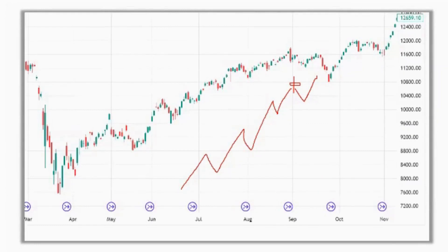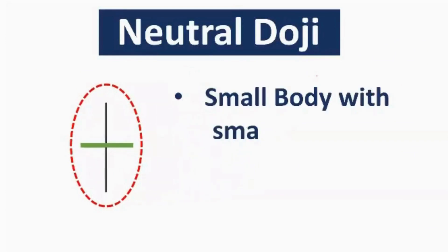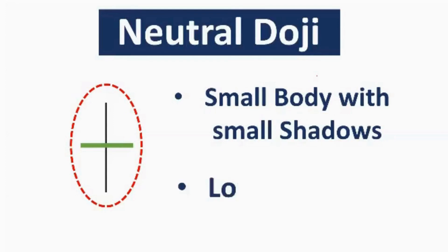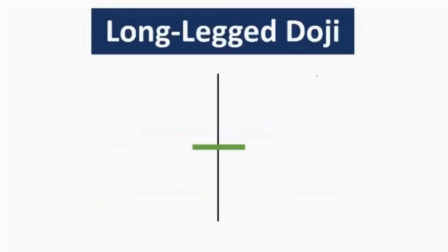The first type is the neutral doji. This pattern has a very small body with a very small shadow. It tells us that the number of buyers and sellers in the stock is very low, volume on this candle is very little, and it indicates low volatility in the market. I personally suggest you ignore this type of doji because it won't indicate a potential reversal or downtrend, and taking trades on it has a high chance of resulting in a loss.